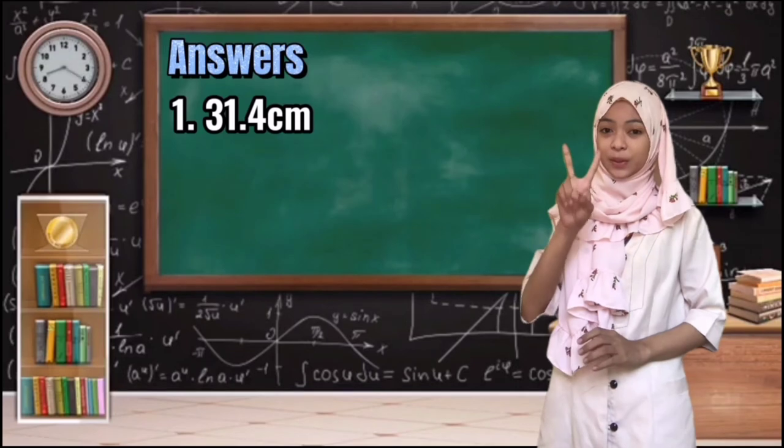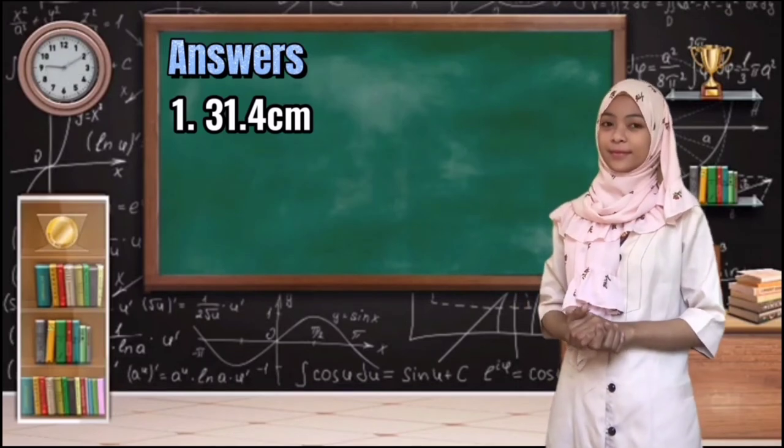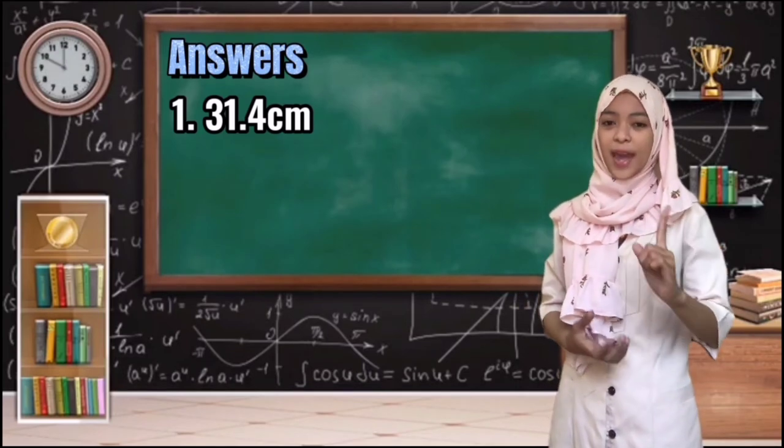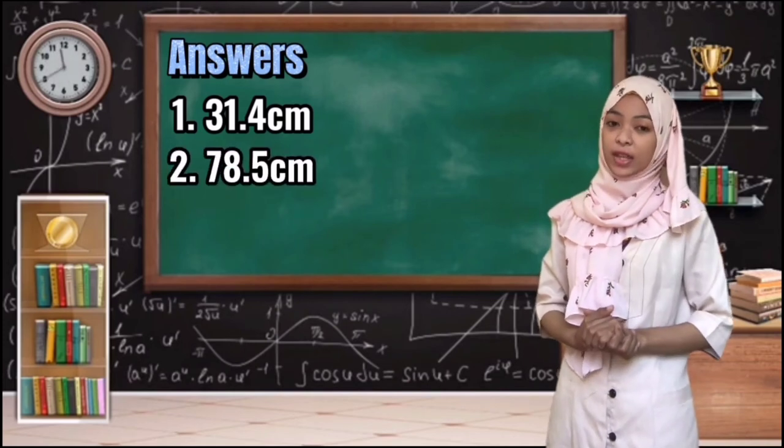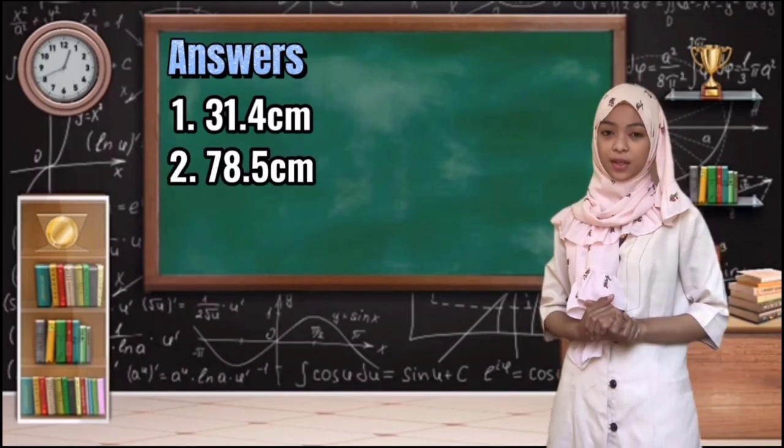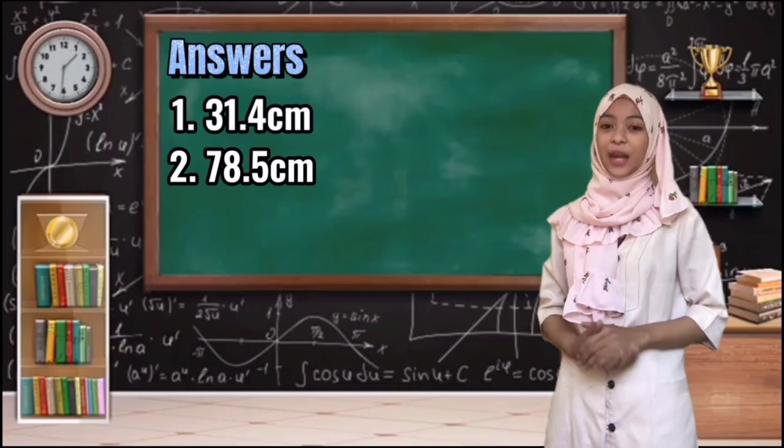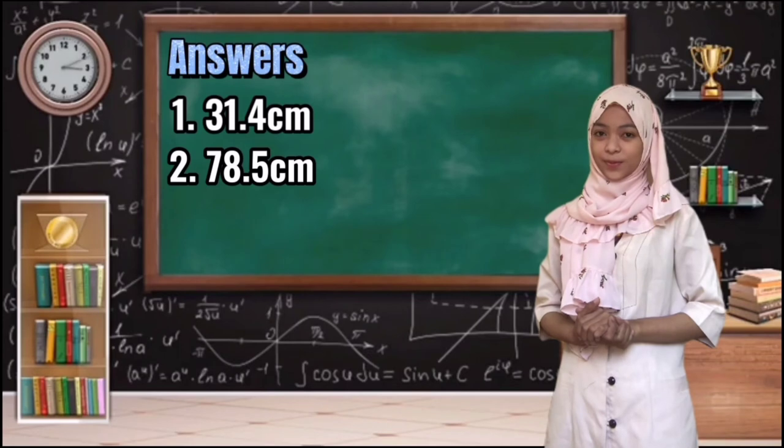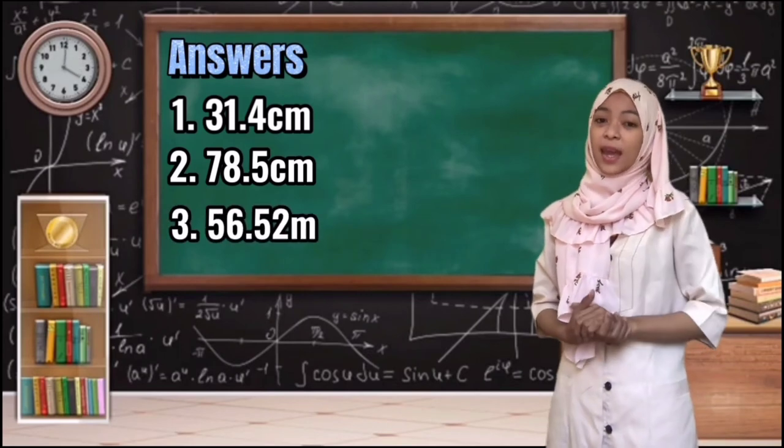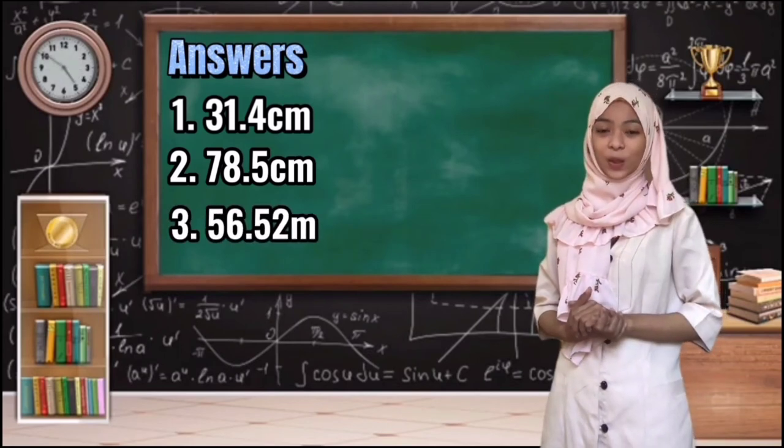How about for item number 2? Great! For item number 2, the answer is 78.5 cm. How about for item number 3? Great! It's 56.52 m.